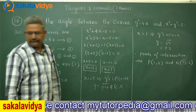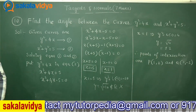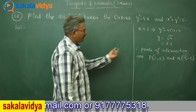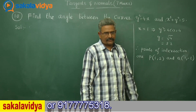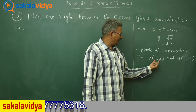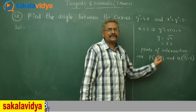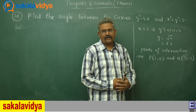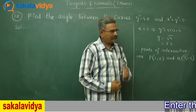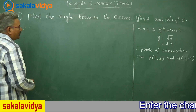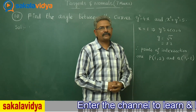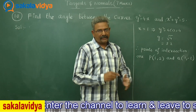The points of intersection of the two curves are P(1, 2) and Q(1, −2). At these respective points of intersection, let us find out the slopes of the tangents m1 and m2. After that, we can apply the tan theta formula.